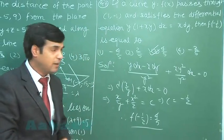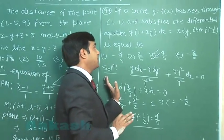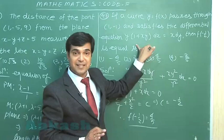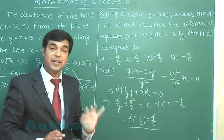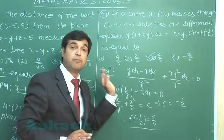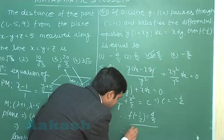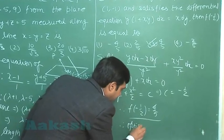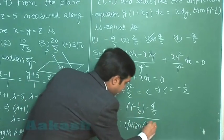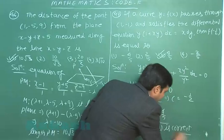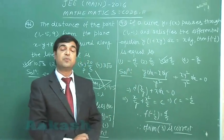So this is clear, how we are getting it? See, the key for this question is, if we can rearrange it as (y dx - x dy)/y², we are getting it as a linear one. The correct option is 3. Let us move to the next one.